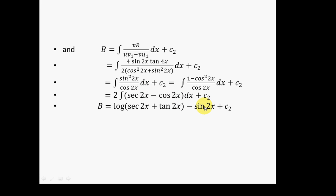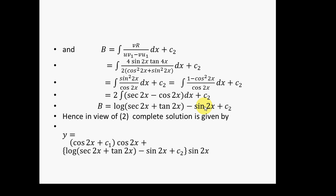Putting the values of A and B into the equation y = Au + Bv gives the complete solution of the given differential equation by the method of variation of parameters. This is the method we have to adopt to find the complete solution.